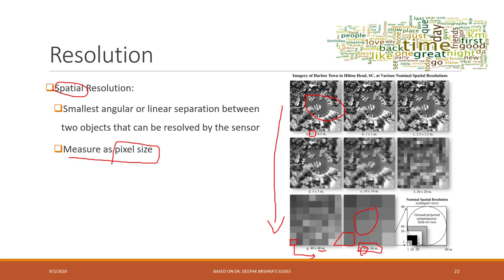For example, a pixel size of 40 meters means one pixel represents 40 meters in length on the ground. An 80-meter pixel size is four times bigger. This pixel size could be 20 meters, this one 10 meters, and this one 0.5 meters. So spatial resolution is also described as pixel size — if an image has a pixel size of 10 kilometers, that means one pixel represents 10 kilometers on the ground.